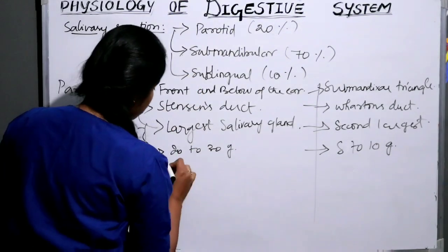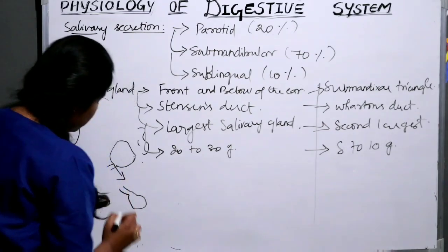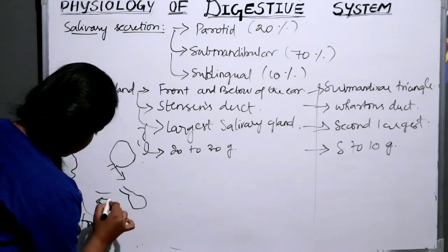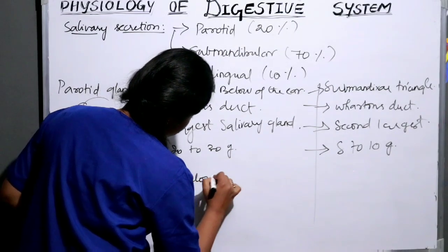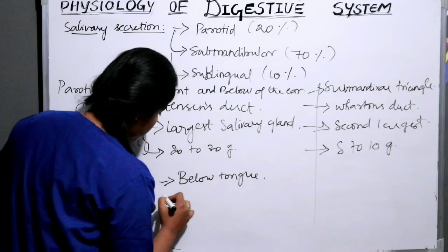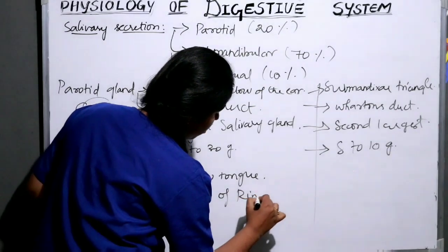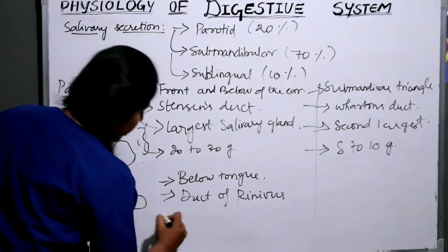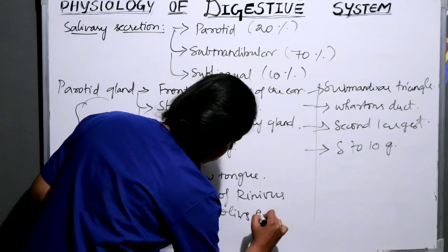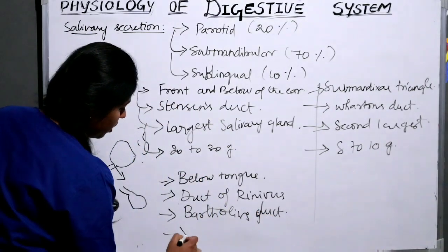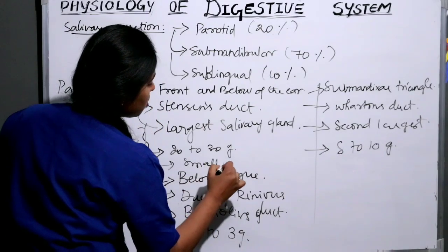The last major gland is the sublingual. It lies just below the tongue and is drained by the duct of Rivinus. It contains one large duct called Bartholin's duct. It weighs up to 2 to 3 grams and is the smallest salivary gland.